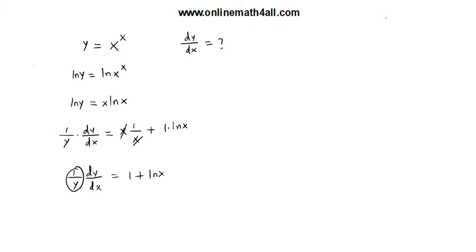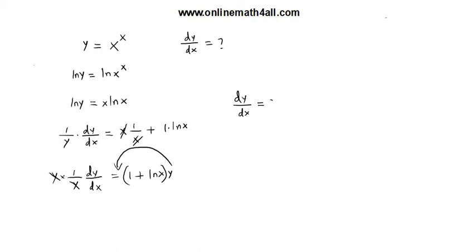Now, to get rid of the 1 over y, we multiply both sides by y because we need dy over dx alone. So to eliminate 1 over y, just multiply both sides of the equation by y. Then y and y cancel out. We get dy over dx on the left side. On the right side, we distribute y to 1 and ln x, writing y in front of the parenthesis. Then we get y times the quantity 1 plus ln x.